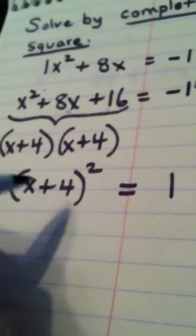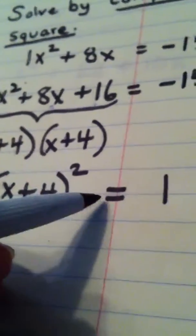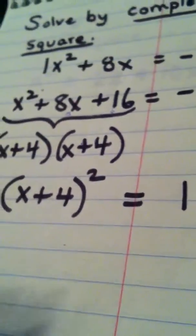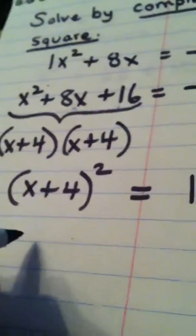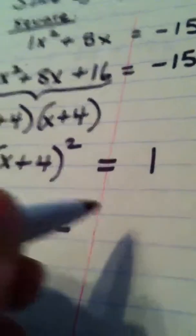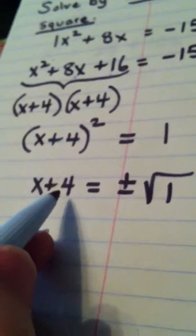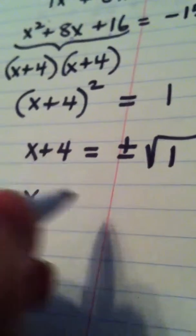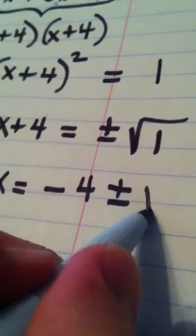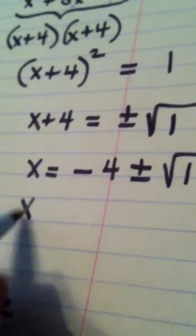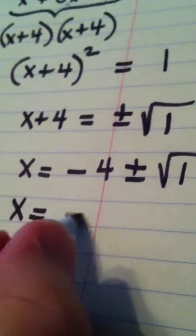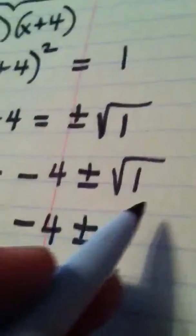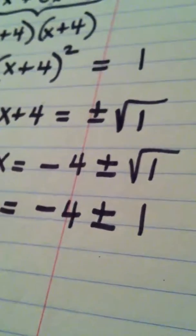Negative 15 plus 16 is 1. So we now have, as we said in class, something squared equals a constant. We apply the square root property: if (x + 4) squared equals 1, then x + 4 equals plus or minus the square root of 1. To get x by itself, we move the 4 over using subtraction. So x equals negative 4 plus or minus the square root of 1. We see if we can simplify — the square root of 1 is just 1, so we no longer need the radical.